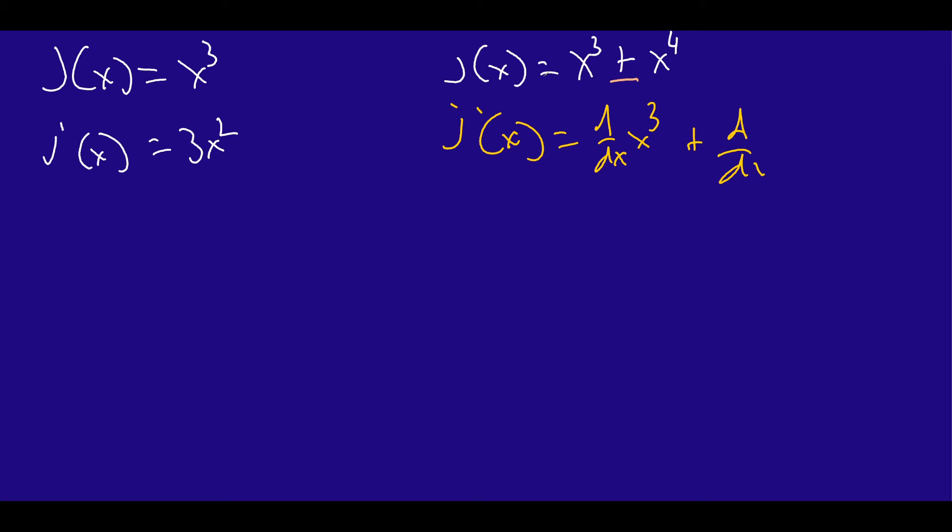So, in other words, to make this as simple as possible, essentially what we're going to have here is 3x squared, because that's the derivative of the first term, the first function. And then it's going to be plus 4x to the 3rd, which is the derivative of the second function. That's kind of what we're trying to say.